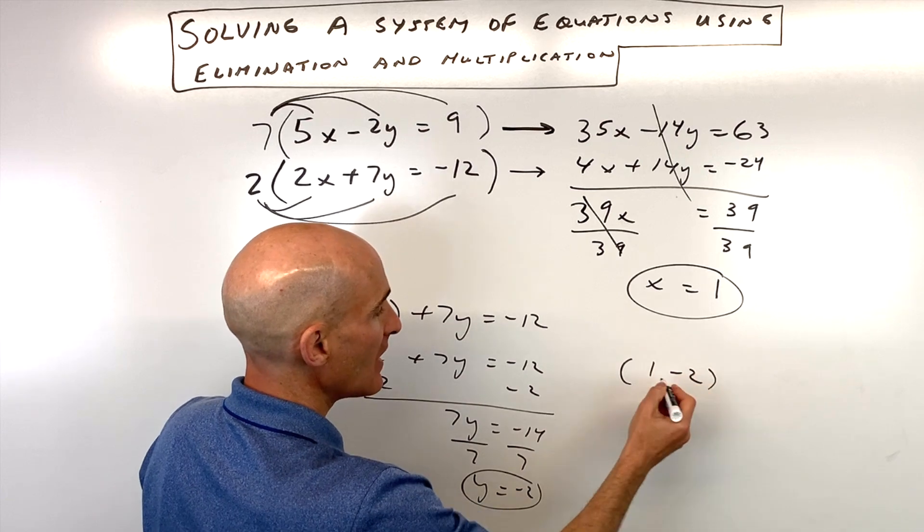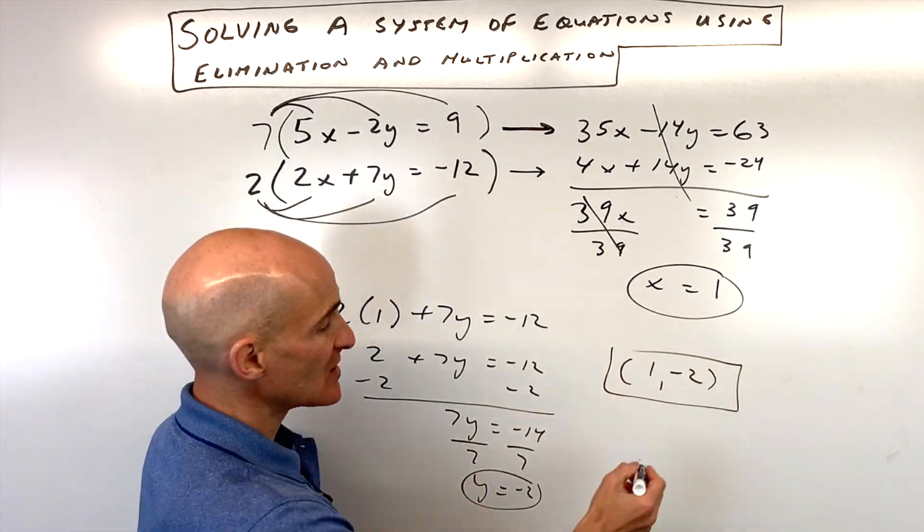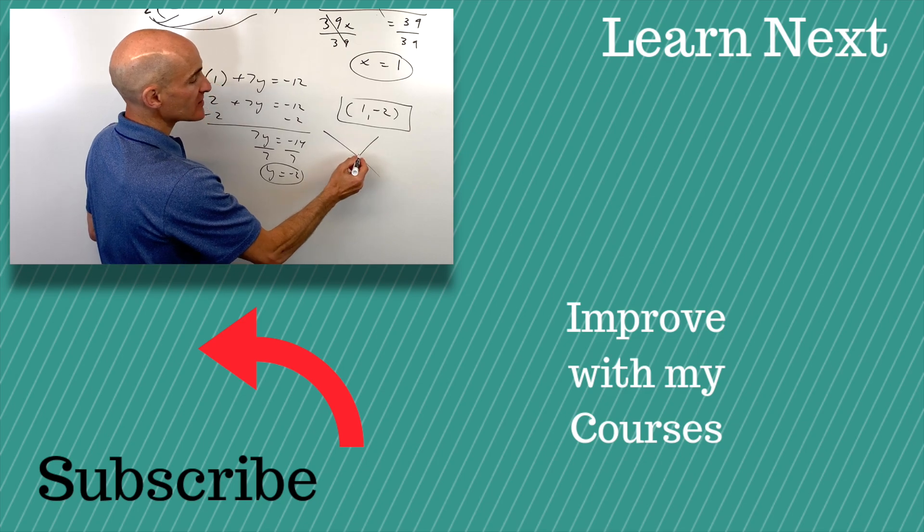Now you want to write your final answer as a coordinate pair like this. And this just represents where these two lines are crossing or intersecting.